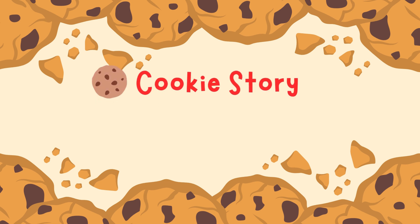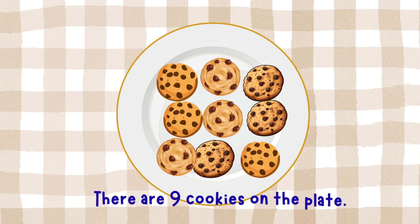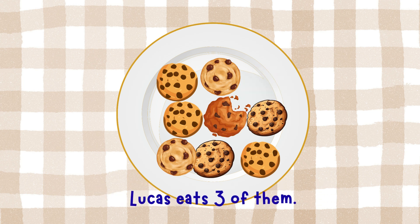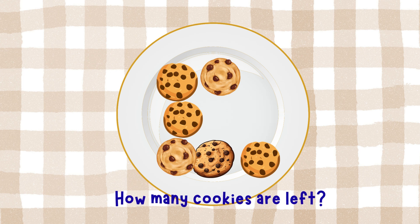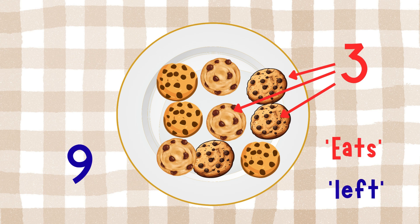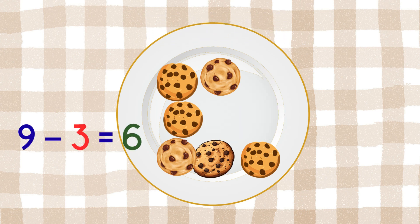Cookie story — subtraction! Here's another one: there are nine cookies on the plate. Lucas eats three of them. How many cookies are left? The numbers are nine and three. Clue words: 'eats' and 'left' — that means subtraction. Nine minus three equals six. Six cookies are left.